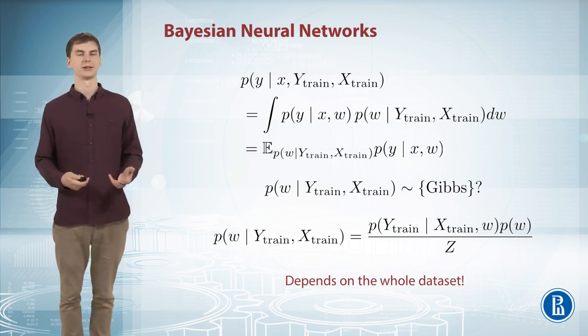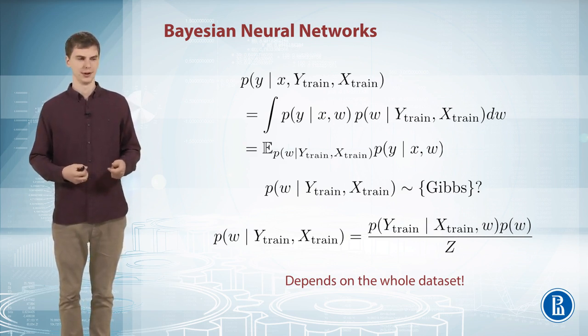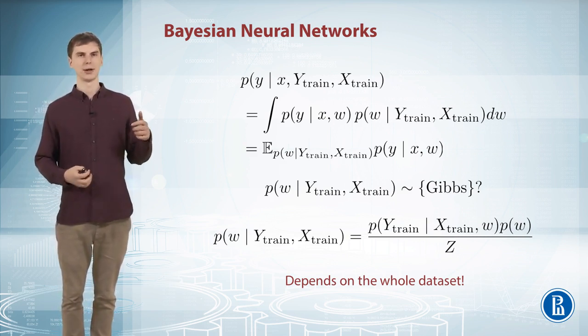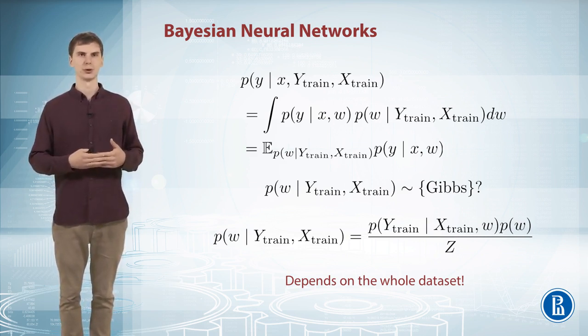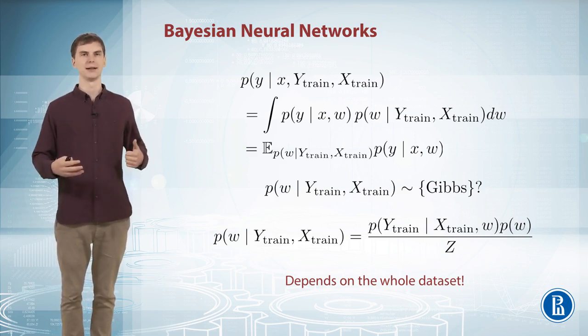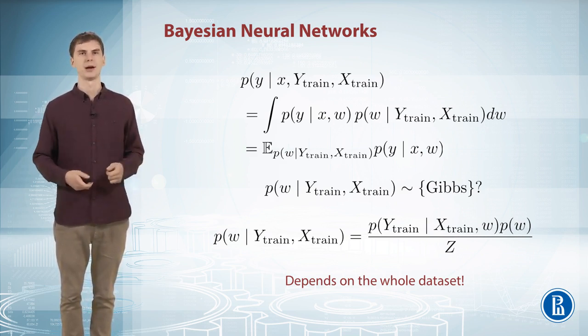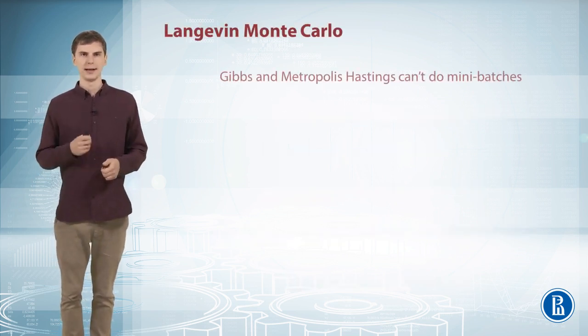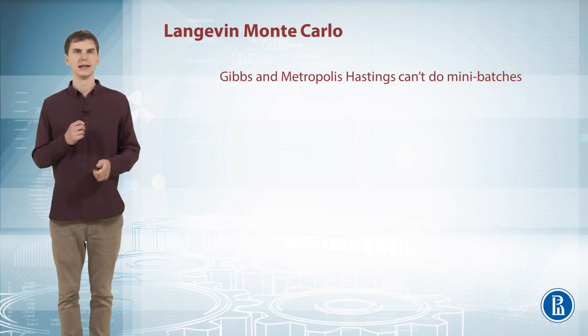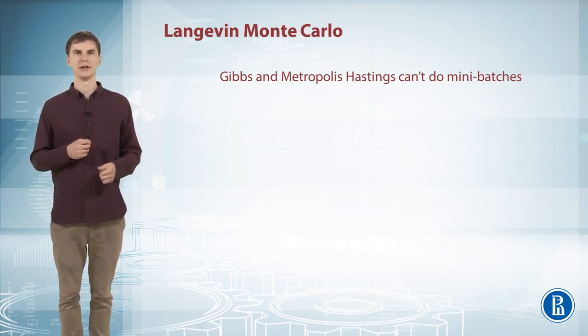So we have to do something else if we don't want to, when we run our Bayesian neural network on a large dataset, we don't want to spend time proportional to the size of the whole large dataset at each iteration of training. We want to avoid that. So let's see what else can we do. And here comes the really nice idea of something called Langevin Monte Carlo.